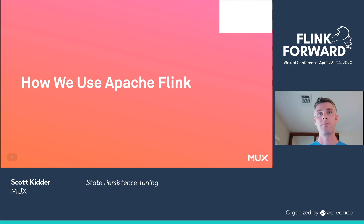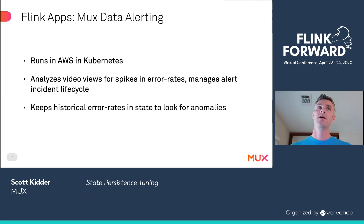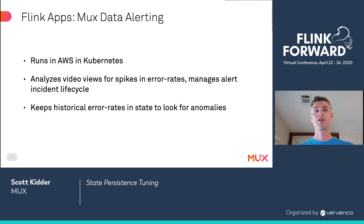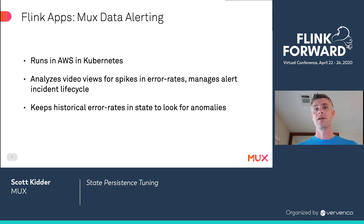So how did we use Apache Flink? We've got MUX Data apps, primarily around alerting, that run in AWS Kubernetes clusters. That alerting app analyzes video views for spikes and error rates that could be an indication of a widespread problem for a customer property. It manages the alert incident lifecycle and also keeps track of historical error rates to provide context about what we're currently seeing relative to what we've seen in the past.